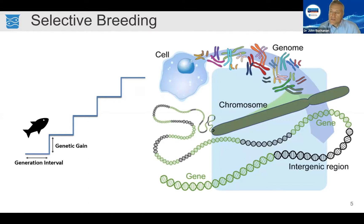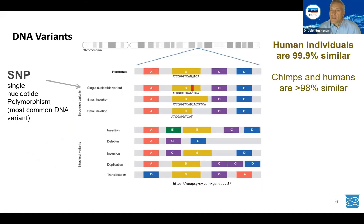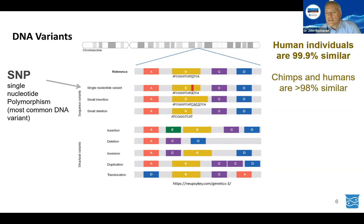We can consider the whole genome — all the chromosomes and DNA of an organism — and how best to select for changes there that lead to increased performance. These changes are called variants in the DNA. There are many types, from very simple changes such as a single base pair change, called a SNP or single nucleotide polymorphism, which is the most common DNA variant.